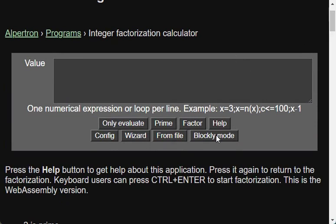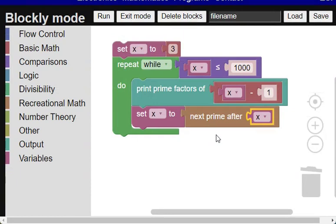Now we go back to blockly mode and save the program. To do that we write the name of the program and then press the save button.